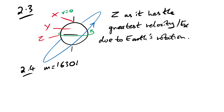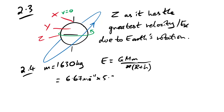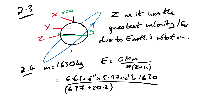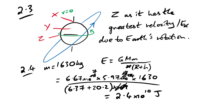Question 2.4: the satellite has a mass of 1,630 kg. Calculate the GPE when in the orbit from 2.2. GPE = −GMm/R, where R = Rₑ + h = 26.57 × 10⁶ m. Combining powers of 10: −11 + 24 − 6 gives exponent +7. The result is 2.4 × 10¹⁰ J. The mark scheme shows a negative sign, but we don't really care since GPE is always just a change anyway.